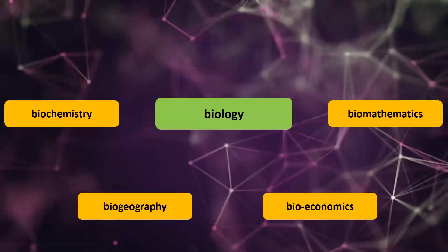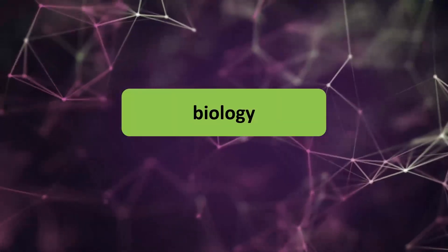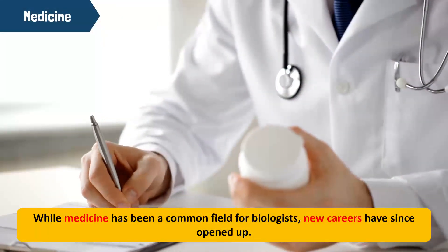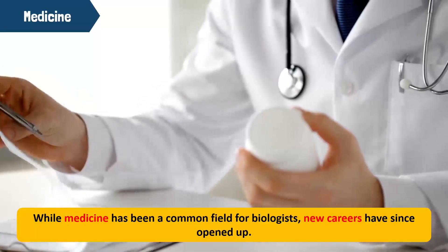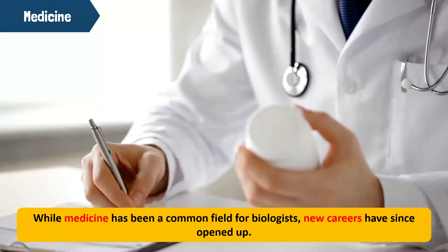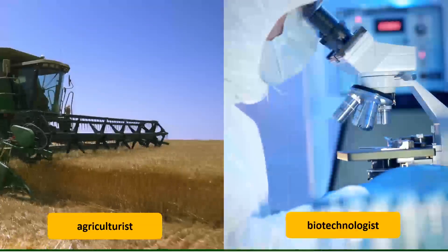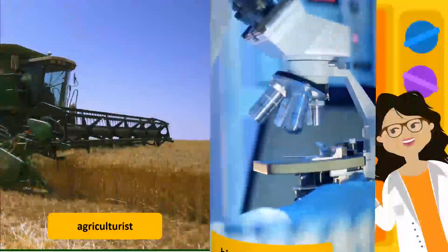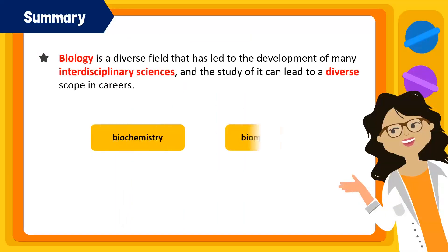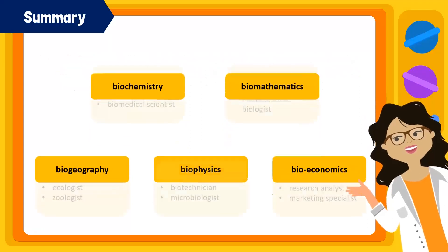All these interdisciplinary sciences widen the scope of knowledge and thus the career potential of biology. While medicine has been a common field for biologists, new careers have since opened up. Aside from becoming a doctor or a surgeon, there are other careers. For example, you can be an agriculturist and deal with food crops and animals, or a biotechnologist who works in the production of useful products through microorganisms. To summarize, biology is a diverse field that has led to the development of many interdisciplinary sciences, and the study of it can lead to a diverse scope in career.